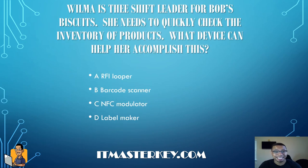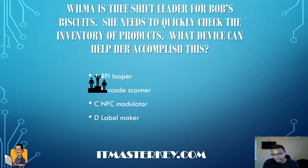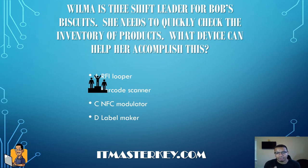Wilma is the shift leader for Bob's Biscuits. She needs to quickly check inventory of products. What device can help her accomplish this? The answer is a barcode scanner. You can scan to check inventory or scan items in if you have a surplus or a delivery. An NFC modulator is not a real thing, an RFI looper is not a real thing, and a label maker wouldn't help with inventory checks.